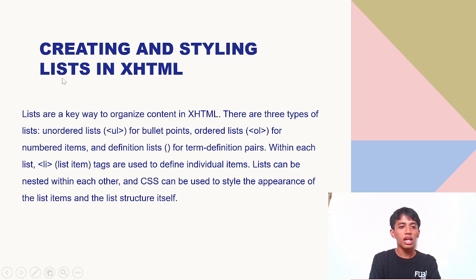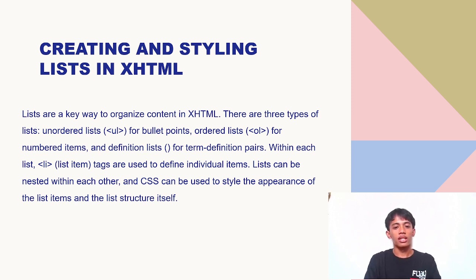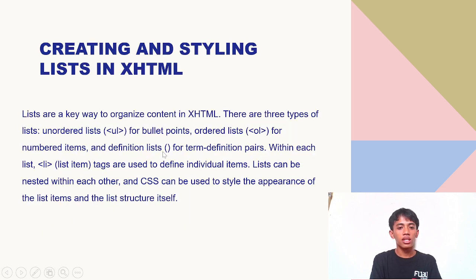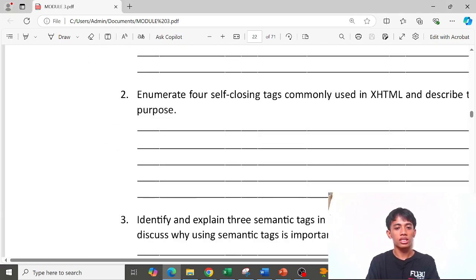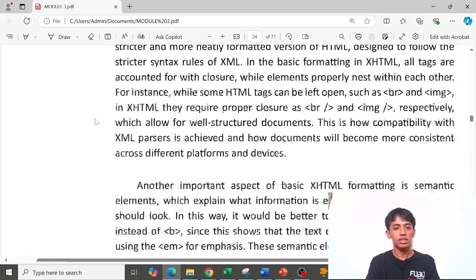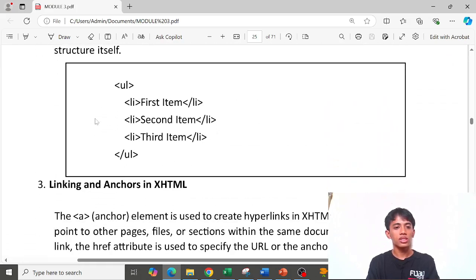Second is creating and styling lists in XHTML. There are three types of lists in XHTML: the unordered list, the ordered list, and the definition list. An example of this code shows the ordered list tag with its list item tags.